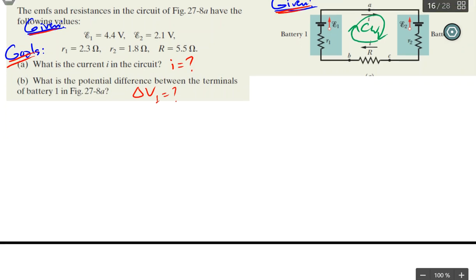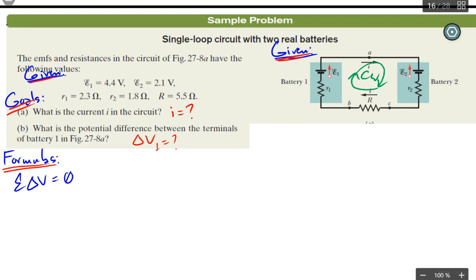Formulas. What formulas will we need? Since it is the loop rule, we're going to need this equation. I like using this one. And all the rises equal the drops. And remember that the loop rule is based on the law of conservation of energy.